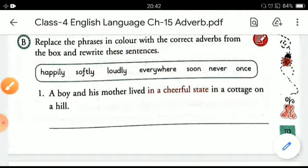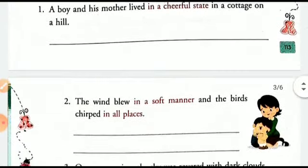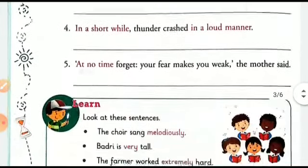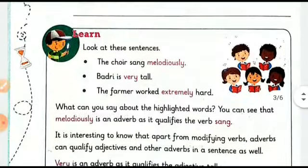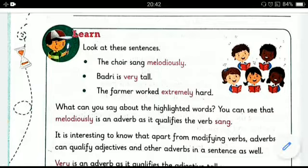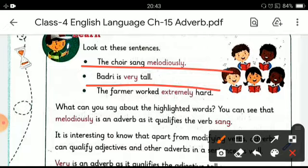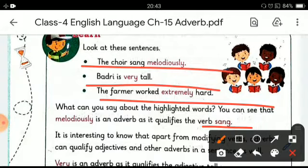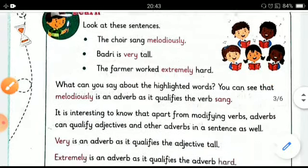In a similar manner, you can choose the correct adverbs from the box and rewrite those sentences. Now look at these sentences: 'The choir sang melodiously.' 'Badri is very tall.' 'The farmer worked extremely hard.' What can you say about the highlighted words? You can see that 'melodiously' is an adverb as it qualifies the verb 'sang' — it is telling you about the manner in which the song was sung.